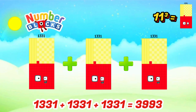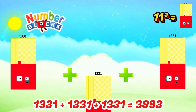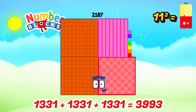Cube of 11 is 1,331. When we add 1,331 three times, the answer is 3,993. Amazing!